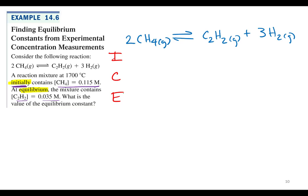First thing you just put in what you got, what the problem gives you, and then we'll figure out what we got to figure out later. We know that initially contains 0.115 methane so that goes right here initial line for methane. Then at equilibrium we got C2H2 0.035, so zero point zero three five here.